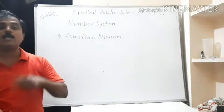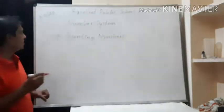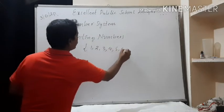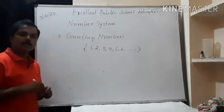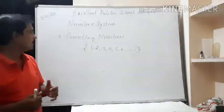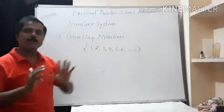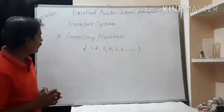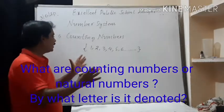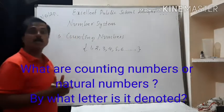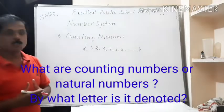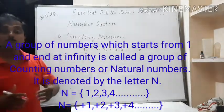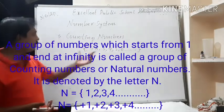Therefore, the counting numbers are one, two, three, four, five, six, and so on. This is a group of numbers which start from one and continue to infinity. This group of numbers is represented in a pair of flower brackets called set marks. The numbers that start from one and end at infinity, used to count objects or things, are called counting numbers.